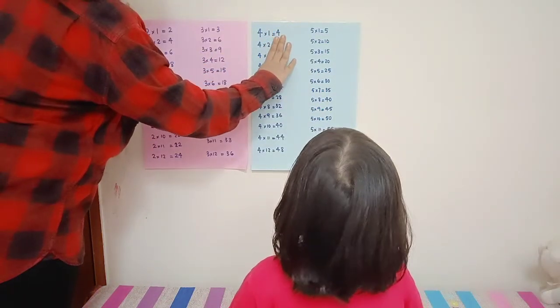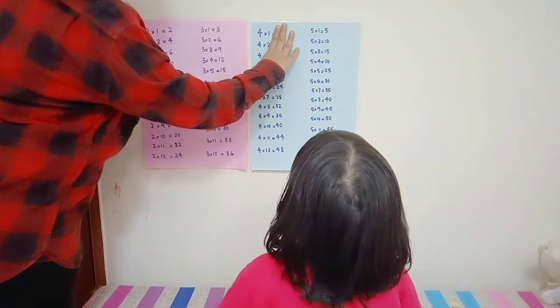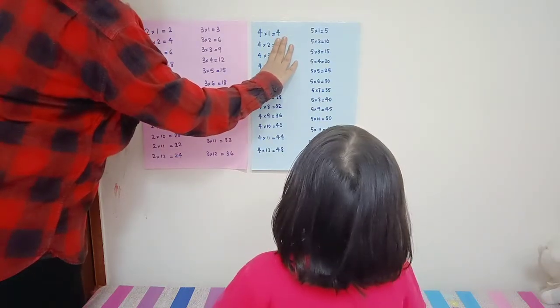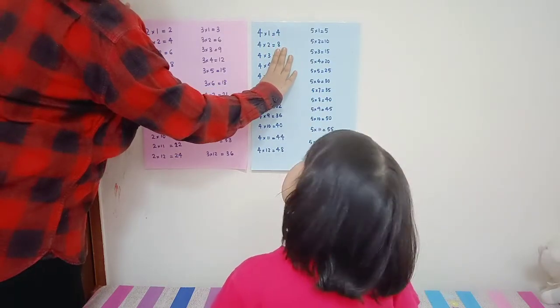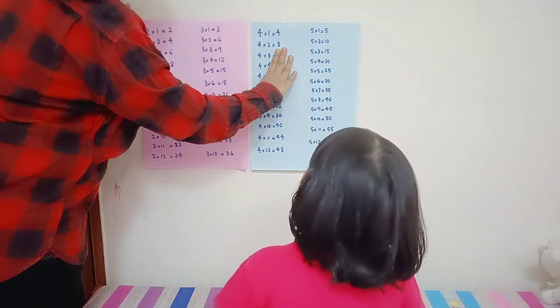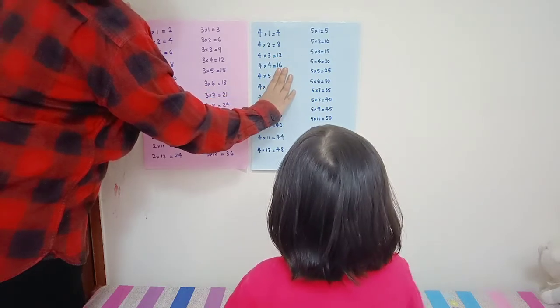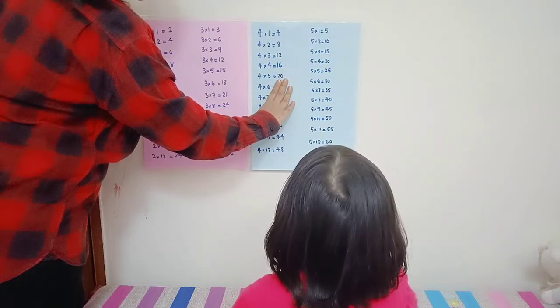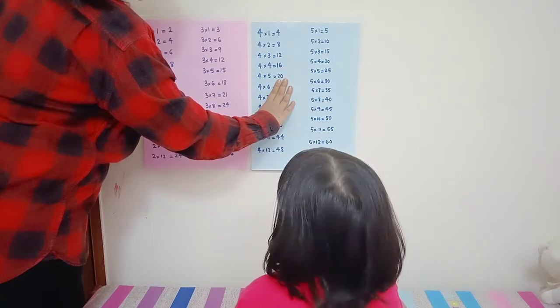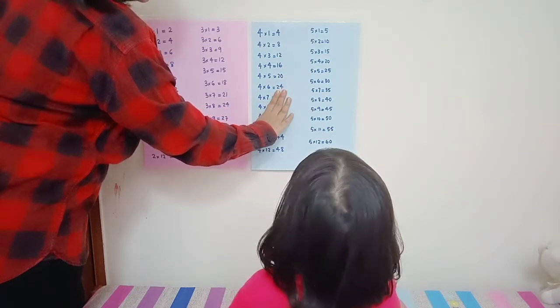Four times one... five, I mean four. Maybe. Four times one four, four times two eight, four times three twelve, four times four sixteen, four times five twenty, four times six... forty, or twenty-four. Four times seven twenty...